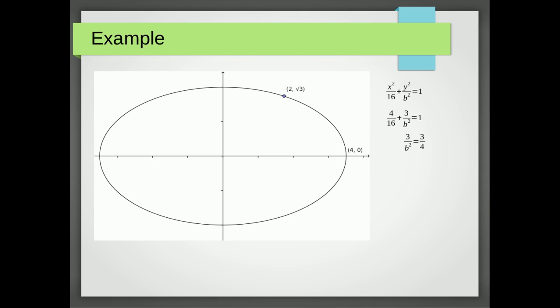So b squared equals 4, which means b equals 2. Now I've got the value that b equals 2, I can substitute that back into the original expression and I get x squared over 16 plus y squared over 4 equals 1.